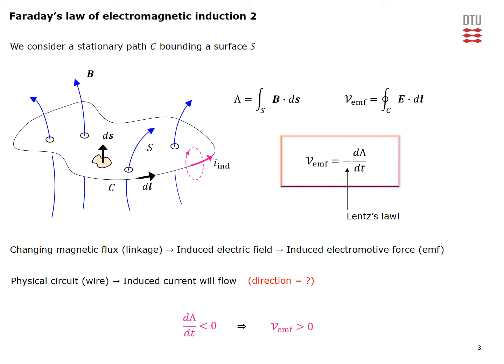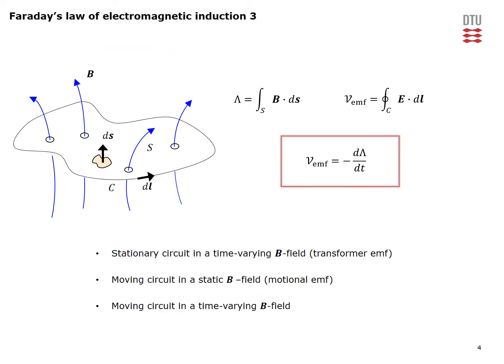The induced electromotive force can be induced by several means. We can have a stationary circuit in a time-varying B field — this is called transformer EMF. We can also have a moving circuit in a static B field — this is called motional EMF. And then you can have the most general case of a moving circuit in a time-varying B field. All of these cases are governed by Faraday's law of electromagnetic induction, and we will see how the first two cases can be explained in terms of fundamental laws.